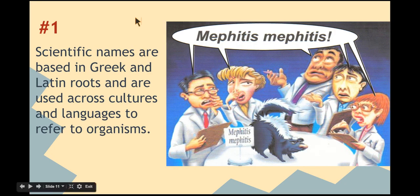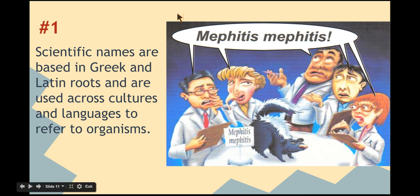The first thing that Linnaeus' system of binomial nomenclature — the assigning of scientific names based on a two-name naming system — is that it made people across cultures and languages able to communicate with each other. Scientific names are based in Greek and Latin roots, which makes them a little difficult to say sometimes, but at least they're continuous across cultures. So the skunk's scientific name is genus Mephidus, species Mephidus — italicized, uppercase genus, lowercase species. You can call up a scientist in France and say Mephidus Mephidus, and they'll know you're talking about a skunk — same thing in China, same thing in Brazil.